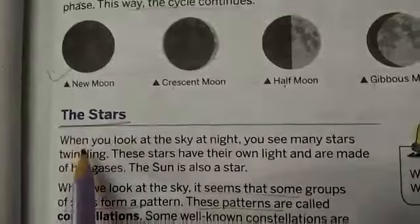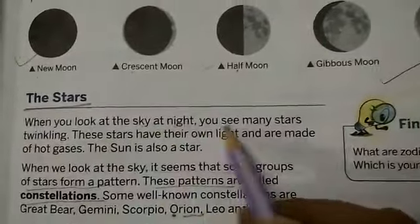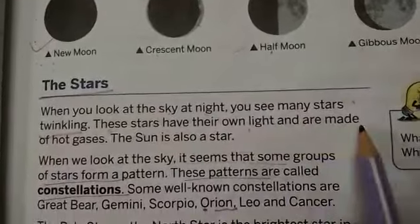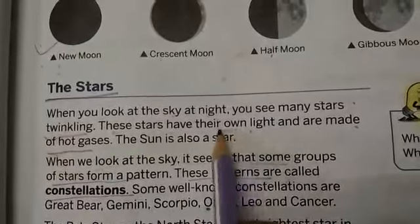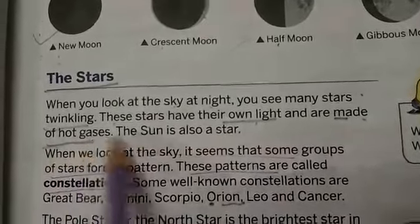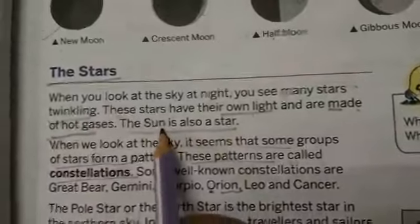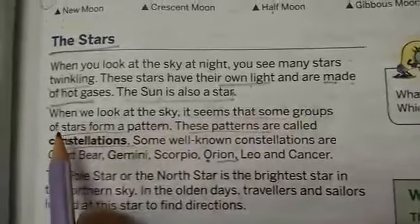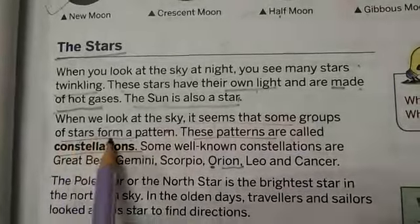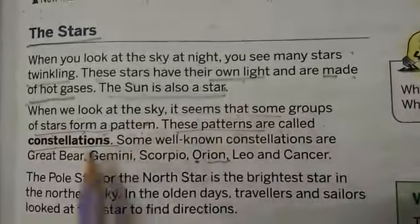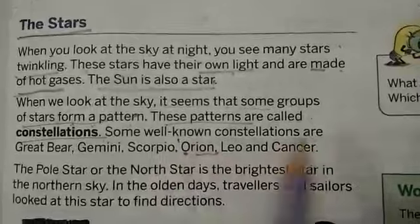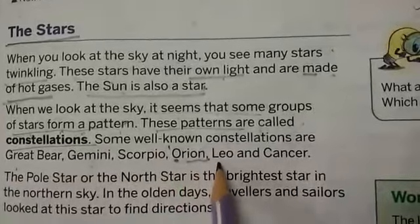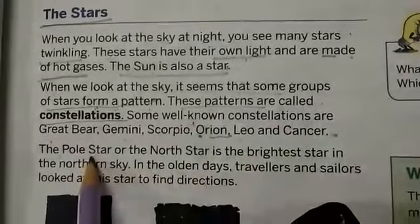Now we learn about the stars. When you look at the sky at night, you see many stars twinkling. These stars have their own light and are made up of hot gases. The sun is also a star. Some groups of stars form patterns called constellations. Some well-known constellations are Great Bear, Gemini, Scorpio, Orion, Leo, and Cancer.